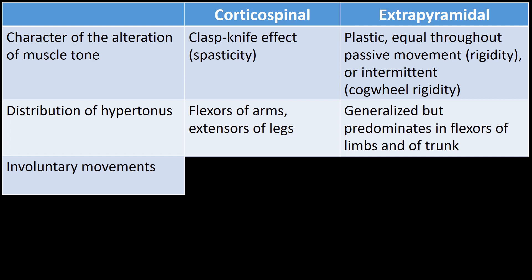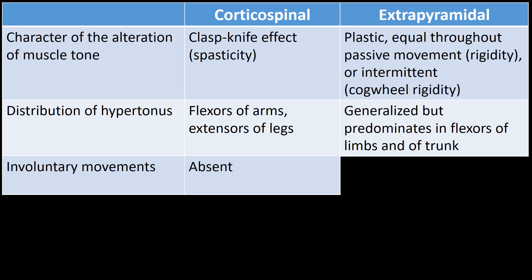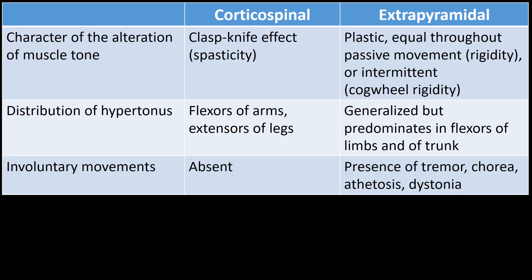Next, we will address involuntary movements. Involuntary movements are absent in patients with corticospinal pathology. In patients with extrapyramidal pathology, tremor, chorea, athetosis, and dystonia are frequently present. I will address each of these findings in the next few frames.